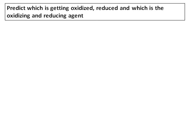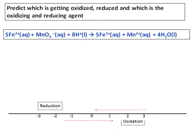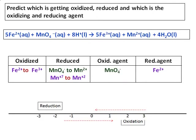Now identify what is getting oxidized and reduced, and find out the oxidizing and reducing agent for the reaction given. For your reference, the number line is also given. Fe2+ is becoming Fe3+; on the number line, you can see it is going more towards the positive side and hence it is oxidized. For reduction, consider MnO4− and Mn2+: if you calculate the oxidation state of manganese, you can see that it changes from positive 7 to positive 2 — it is going more towards the negative side and hence it is reduced. So Fe2+ is the reducing agent, and the permanganate ion, MnO4−, is the oxidizing agent.